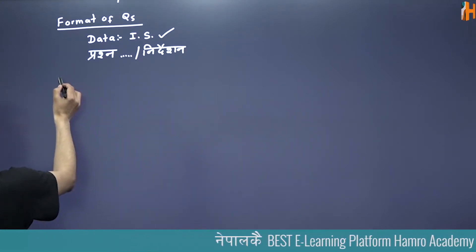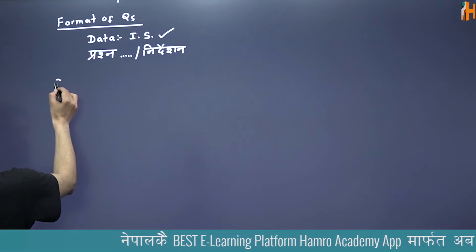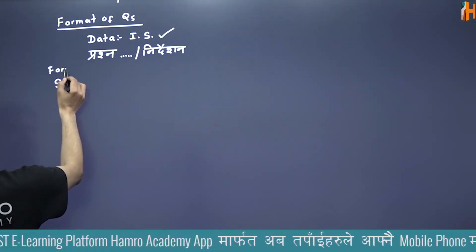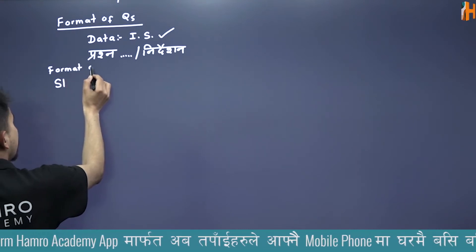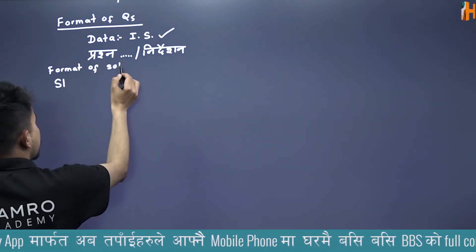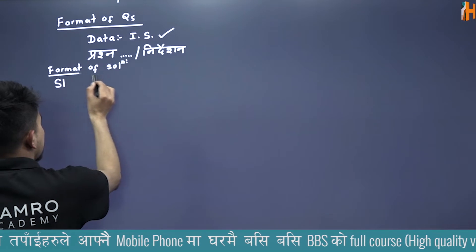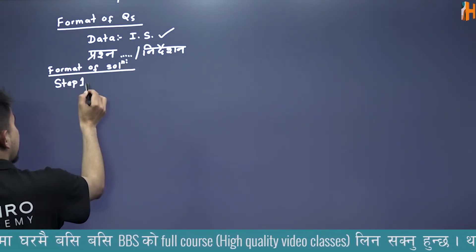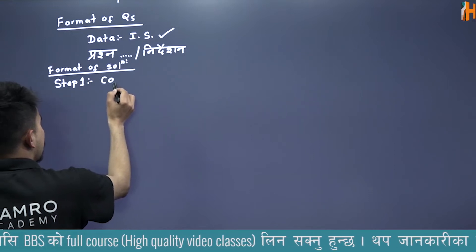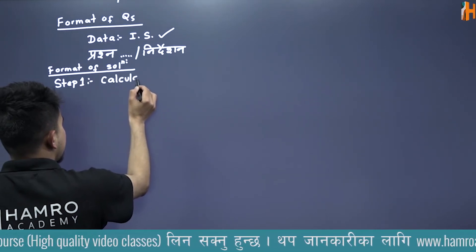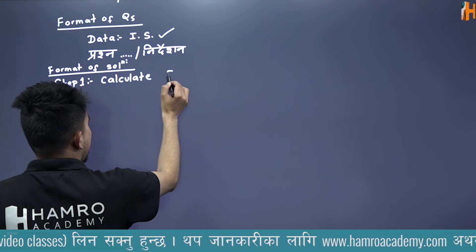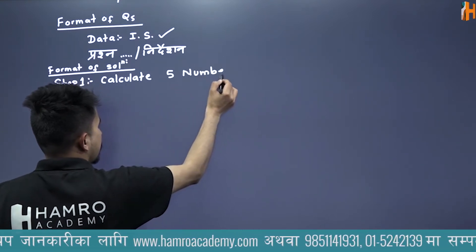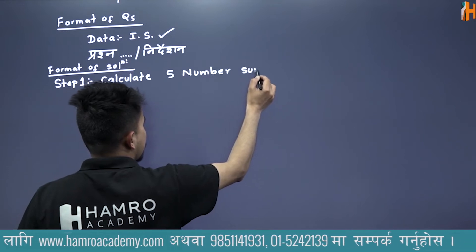Step number one. Solution को format of solution तिर जाऔं। Step number one मा तपाईंले के गर्नुपर्छ भने — calculation of five number summary calculate गर्नुपर्छ।